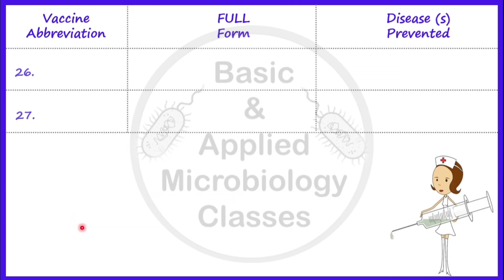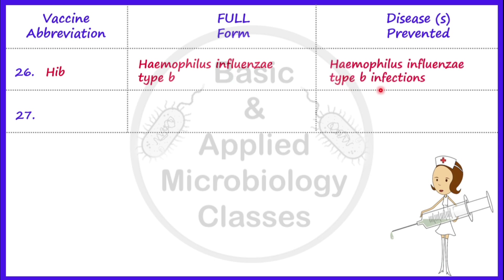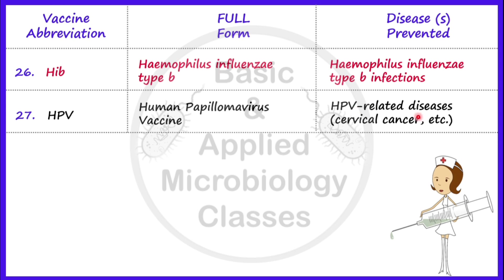Now let's take the next vaccine, that is Hib. Hib stands for Haemophilus influenzae type B vaccine, and it is used to protect against diseases caused by Haemophilus influenzae type B infections. Next is HPV, which stands for Human Papillomavirus vaccine. The HPV vaccine is used to prevent HPV-related diseases — cervical cancer is one very good example. For both of these vaccines, the intramuscular route is preferred.